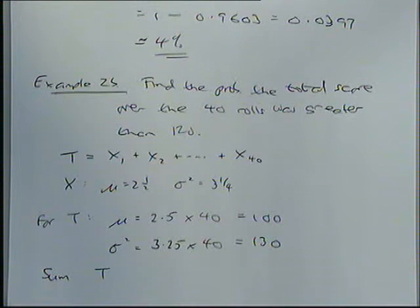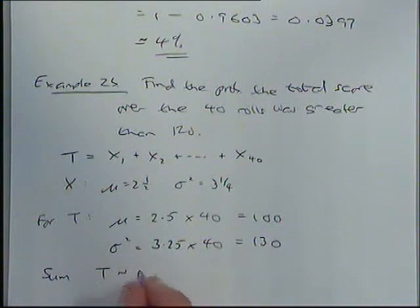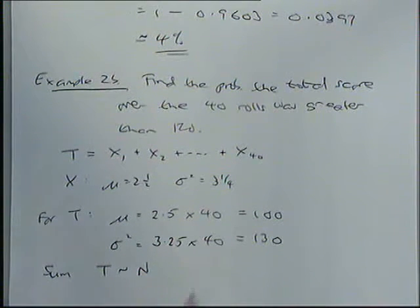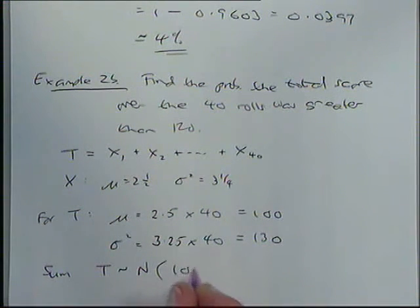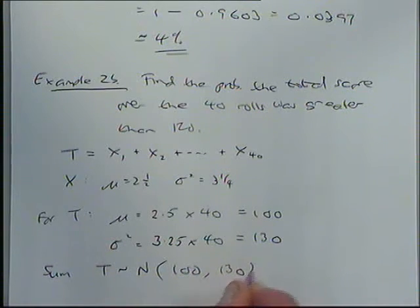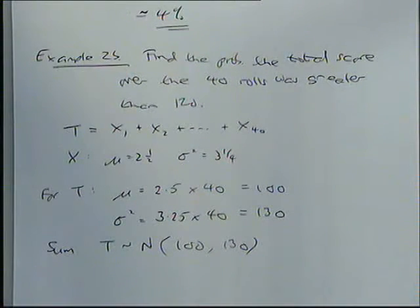Now, because we are adding these up, and they are random variables, it follows from the central limit theorem, really. It's like scaling up your average, it's like doing your average thing lots of times. T itself, the sum of them, will follow the normal distribution with these parameters, 100 and 130. It's not too much of a leap of faith to accept that.